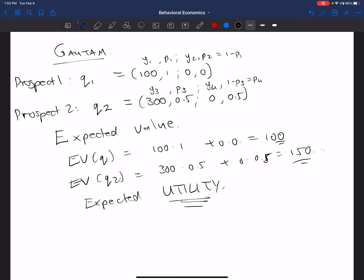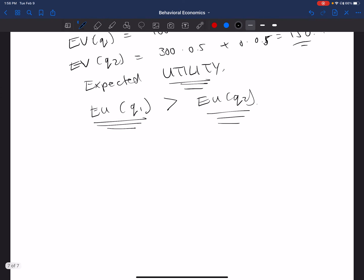So what we want to think about is how could it be the case or what kinds of utility functions would give us the relationship that the expected utility of Q1 is greater than the expected utility of Q2? That is, the expected utility of the first prospect is greater than the expected utility of the second prospect. One such utility function is u as a function of y equal to y to the power 1 minus rho all divided by 1 minus rho, and we say that rho is going to be equal to 0.8. This is a certain functional form for a utility function.